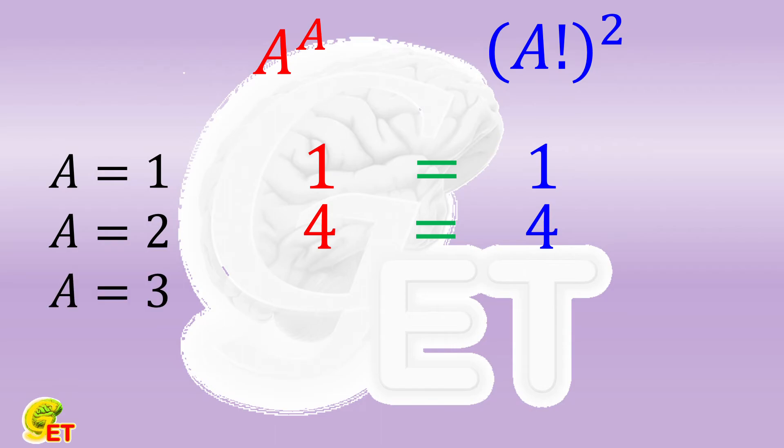When A is equal to 3, the left side is 27, but the right side becomes 36, so the right side is bigger.